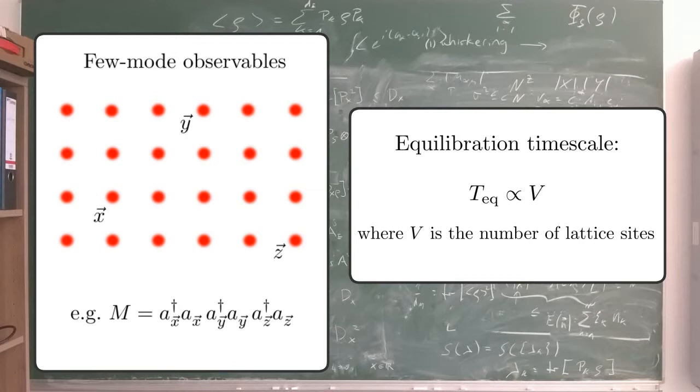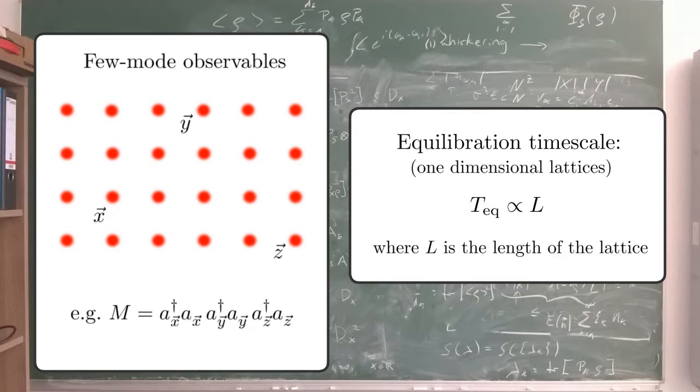For one-dimensional lattices, this is actually the best we can hope for. This is because the time it takes for information to propagate along a line is proportional to its length.